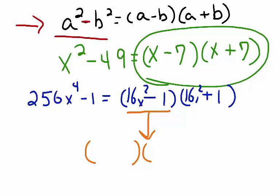Set up two parentheses. A minus sign in one and a plus sign in the other. The square root of 16x squared is 4x. The square root of one is one. And we write 4x plus one.